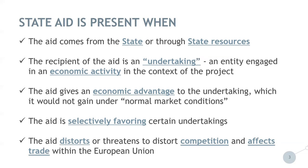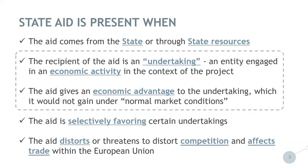The Interreg Central Europe Programme addresses State Aid in all phases of the project lifecycle, yet the key step of the State Aid approach is already in the application stage, when submitted applications undergo specific State Aid assessment focused on listed criteria in order to determine whether or not State Aid is present in a certain project proposal. Particular attention is given to the assessment of the status of undertaking on partner level — whether the lead partner and/or any of the project partners are undertakings. Undertaking is any entity engaged in economic activity, broadly defined as offering goods or services on a given market. A comprehensive list of economic and non-economic activities does not exist.